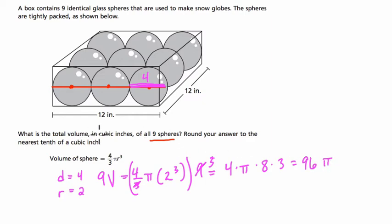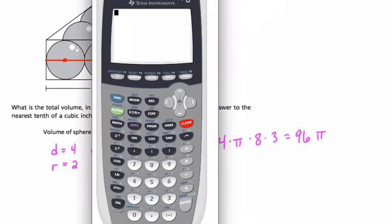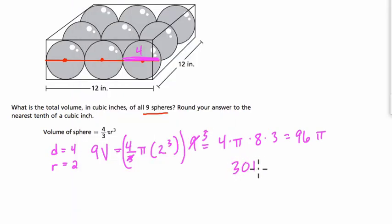But they want the total volume to the nearest tenth, so on the calculator, you can plug this in. 96, and then every calculator has a pi button somewhere, times second pi for me here. Hit enter, and now we'll round to the nearest tenth, 301.6. And we're going to label it cubic inches.